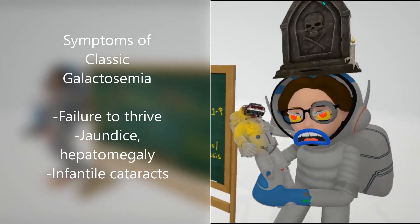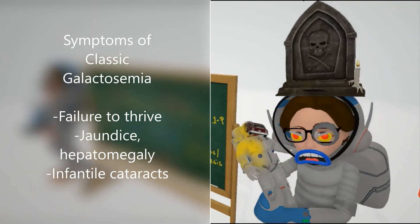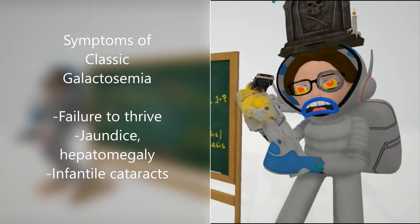This child also has the Cadillac going through his eye - the infantile cataracts. She has a grave on top of her head - remember that classic galactosemia is the worst, much worse than galactokinase deficiency.